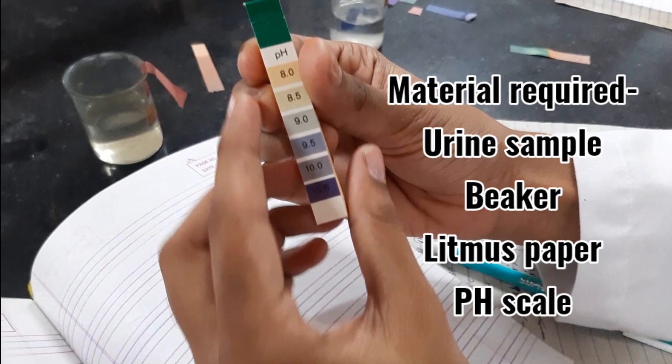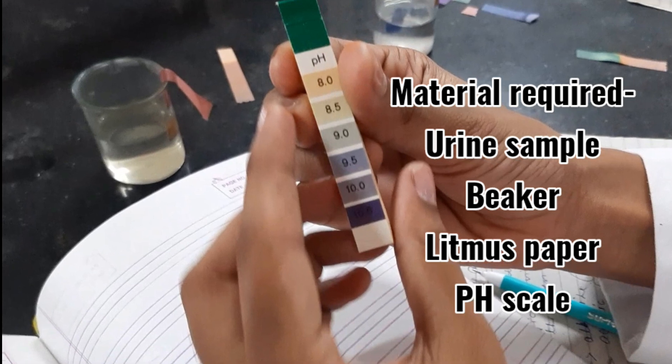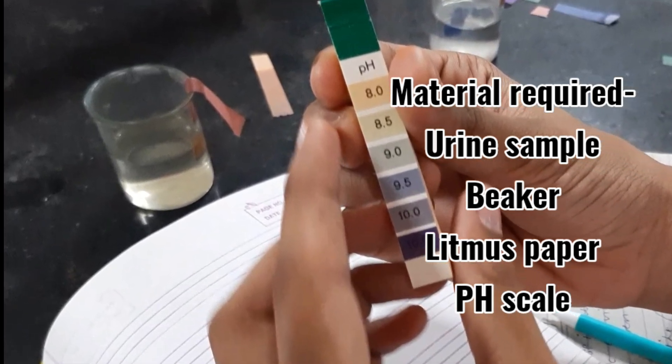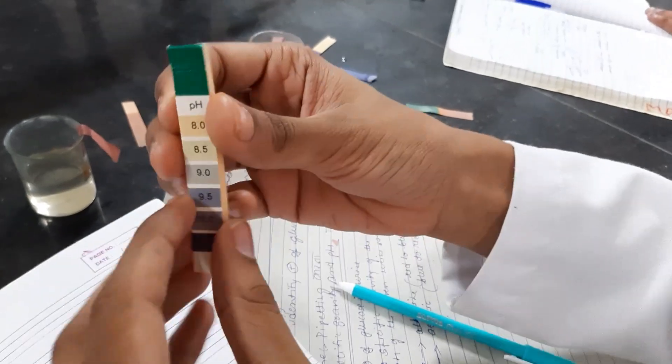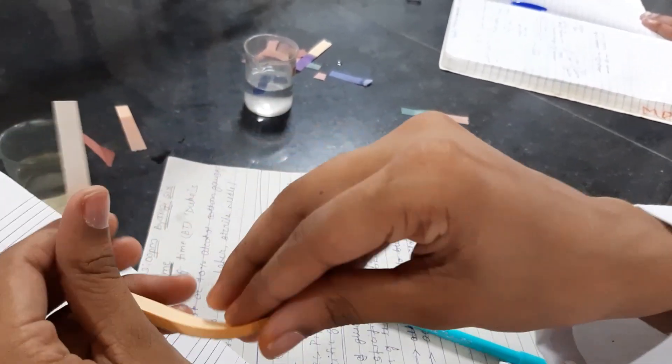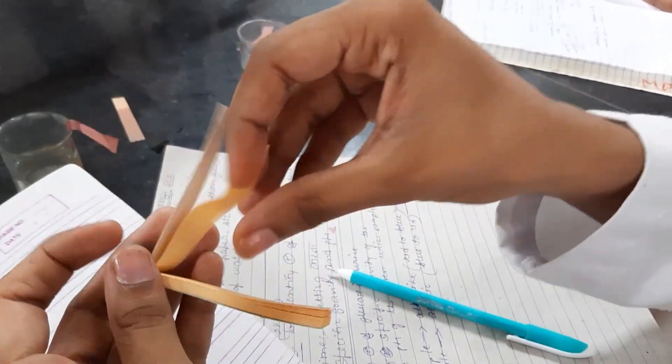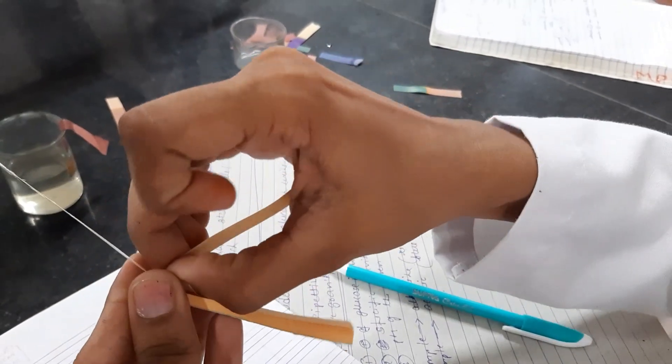Material required is urine sample, beaker, litmus paper, and pH scale. This is litmus paper and we will take one litmus paper from it. This is red litmus paper.